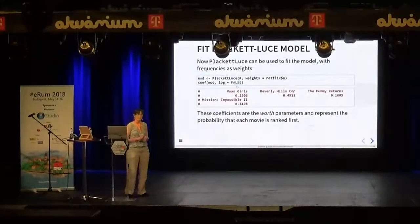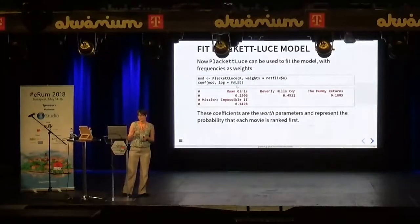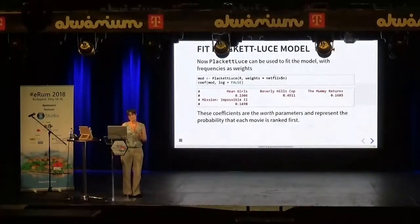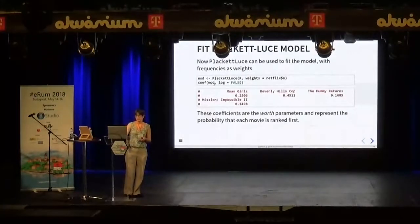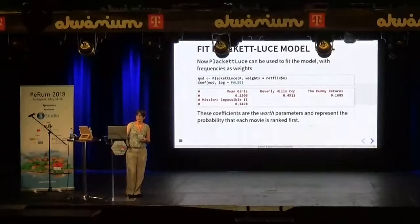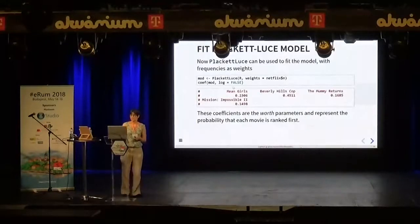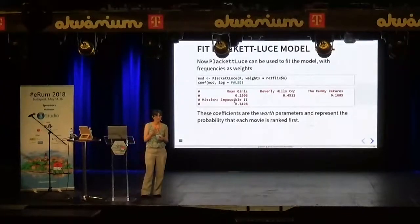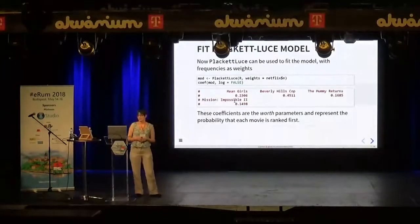Once we've got our data in that format, we can fit the Plackett-Luce model. It's fairly simple — we just pass our rankings object to the model fitting function PlackettLuce, bring back our frequencies and supply those as weights to the model. Then if we call the coef function, which is a method for models fitted by PlackettLuce with the log equals false argument, we get coefficients. These are the worth parameters from the model formulae.